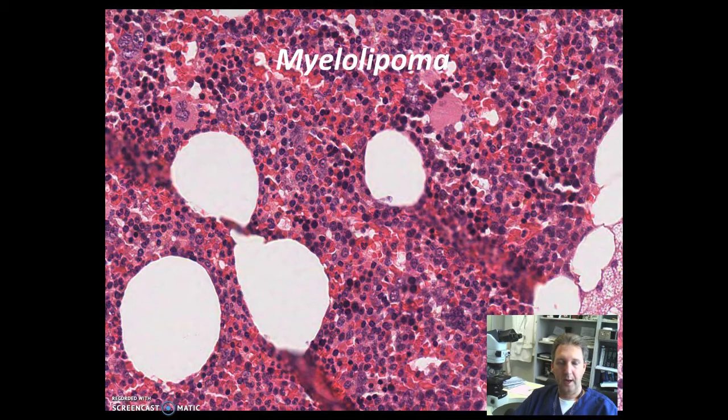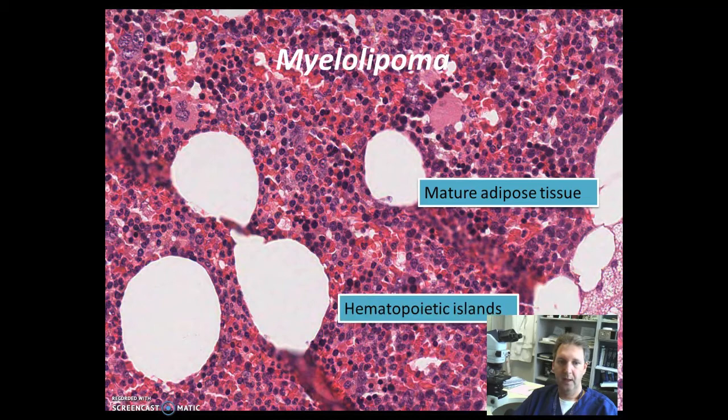Myelolipomas are composed of mature adipose tissue and hematopoietic islands, which can be very prominent. You will see erythroid precursors, myeloid precursors, and also occasional megakaryocytes.